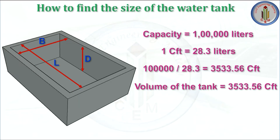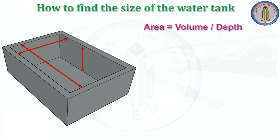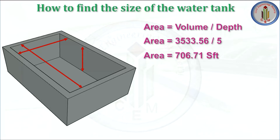Now we have to assume the depth. It depends on the area where we are constructing the tank — whether it is broader or narrower. Here I am going to assume the depth as 5 feet. We know the depth and volume, so we can calculate the area: Area = Volume ÷ Depth = 3533.56 ÷ 5 = 706.71 square feet.